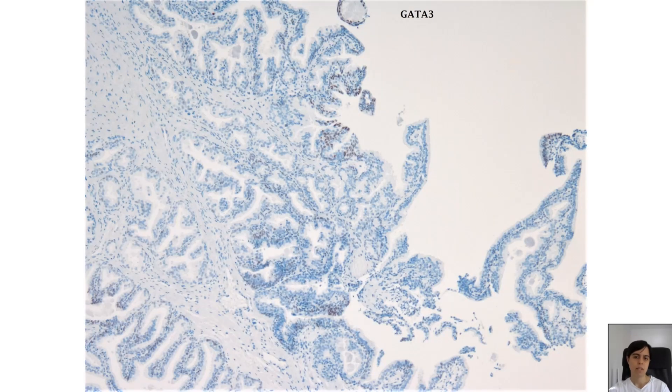And GATA-3 usually highlights some — sometimes more, sometimes less — scattered urothelial cells intermixed within the prostatic epithelium of these lesions.